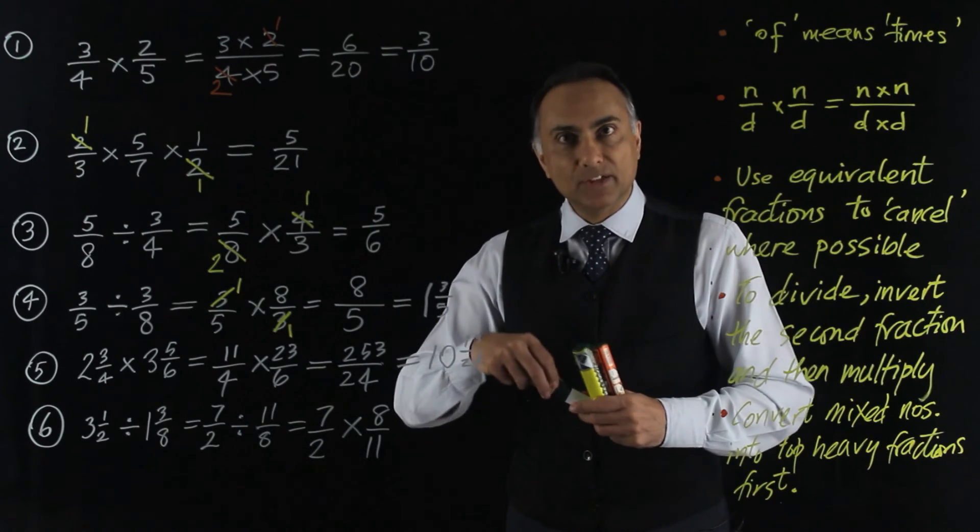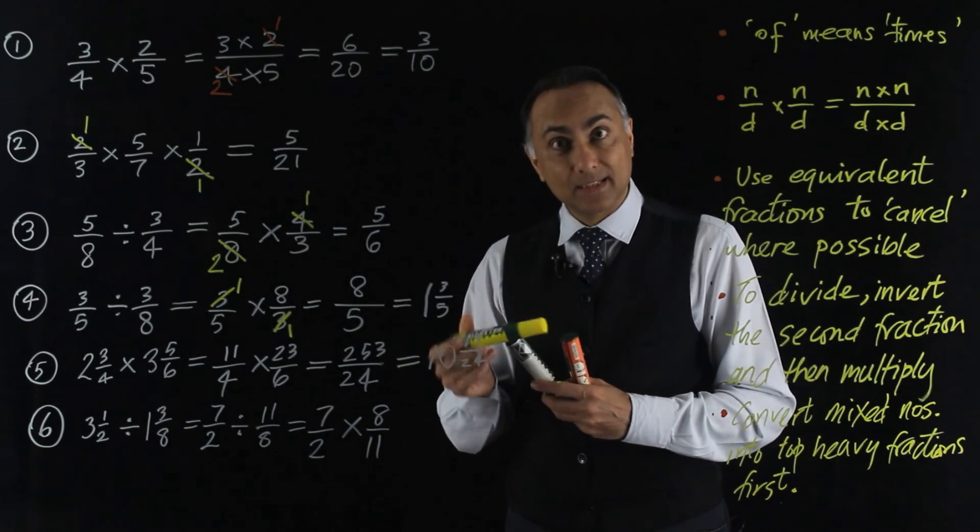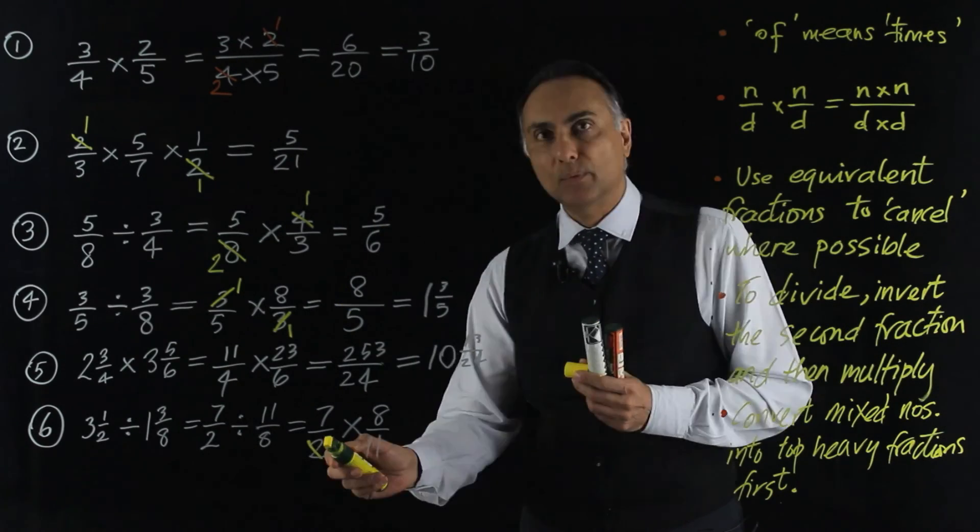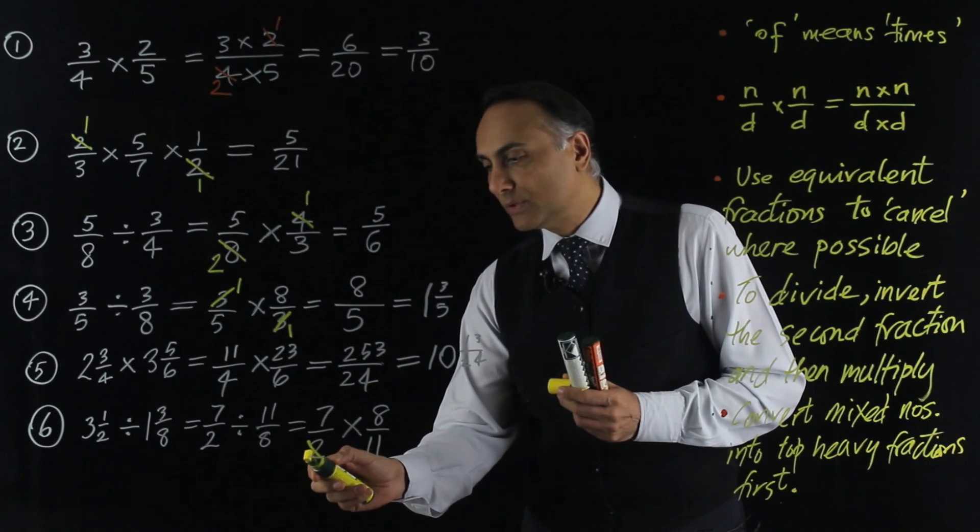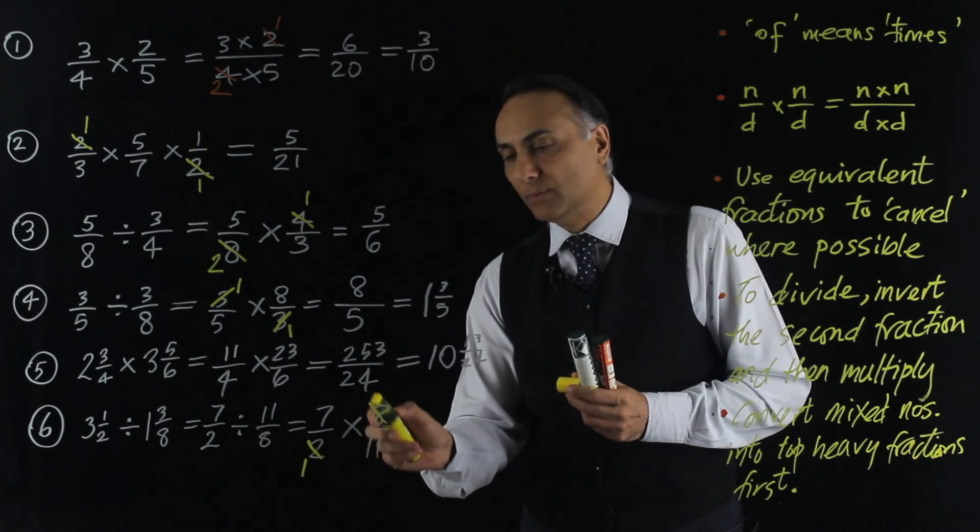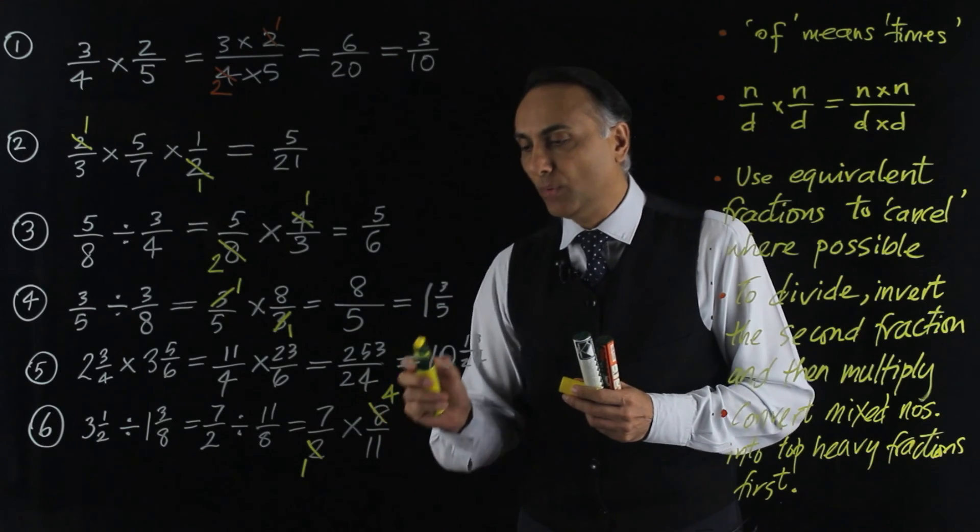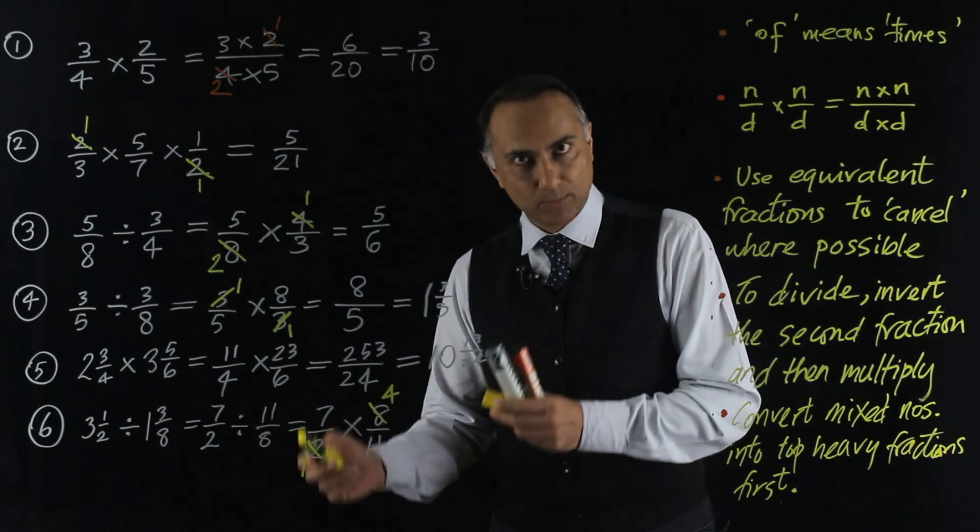The next step is to see if we can reduce the numbers, if we can cancel it down before timesing out. We've got a 2 which can be halved to 1 and an 8 which can be halved to 4. So we've reduced top and bottom by 2.